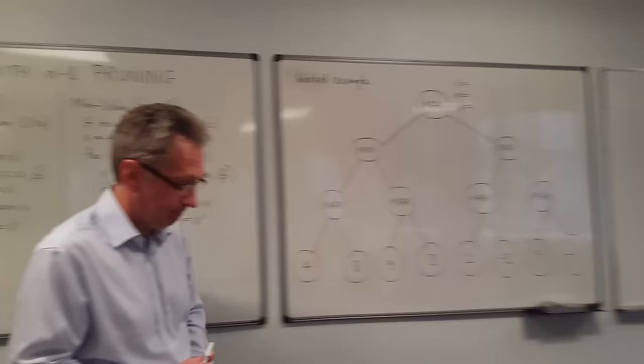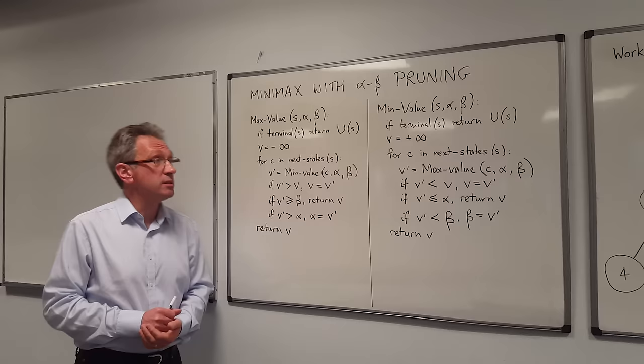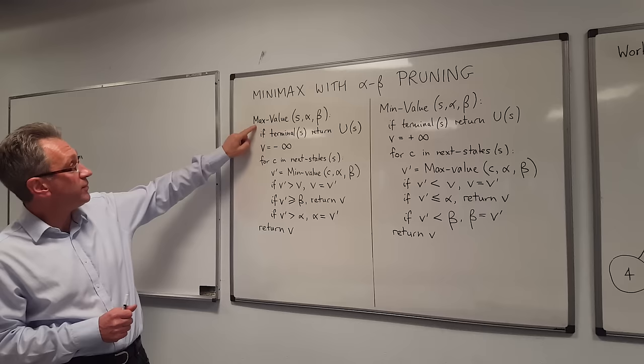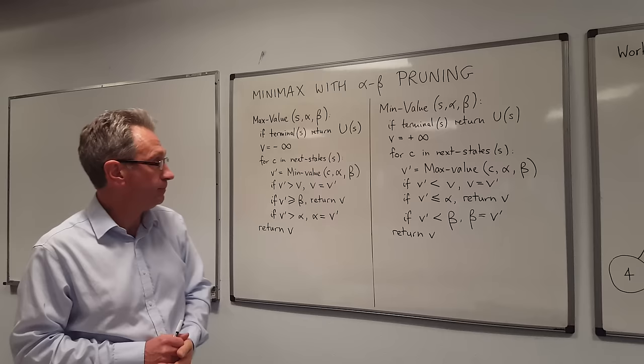The algorithm is explained in the slides, so I'm not going to go over it again here. You have two functions, one's called MaxValue and one's called MinValue. They're mutually recursive, so MaxValue calls MinValue, and MinValue calls MaxValue, and that happens all the way to the bottom of the tree.